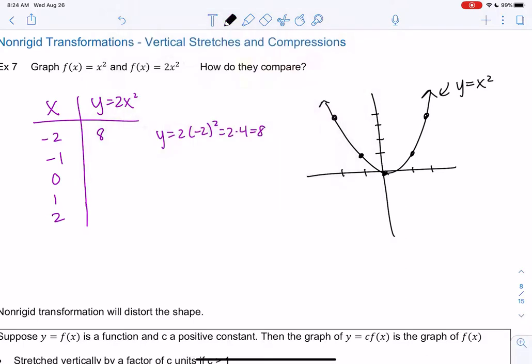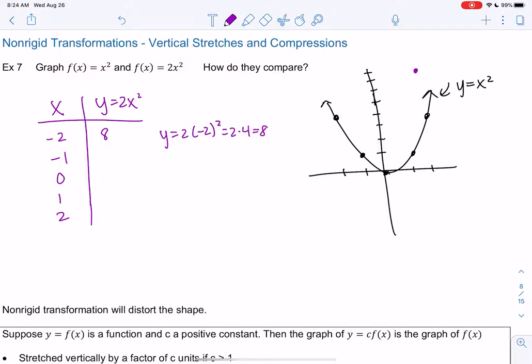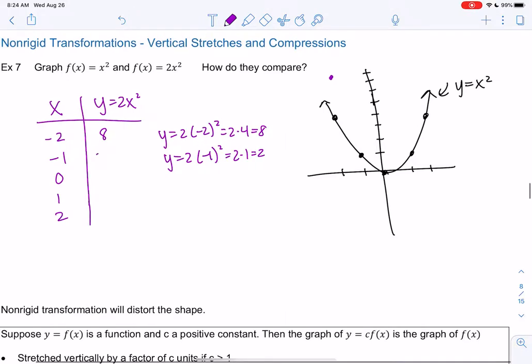So what happens if I plug in negative 2 now? So we get y equals 2 times negative 2 squared. So we'll get 2 times 4, which is 8. So let's make room for 8 on my graph. 4, 5, 6, 7, 8. So we're going to go to negative 2 and it looks like it's just going to be way higher than the previous one. If I plug in negative 1, we get negative 1 squared is 1 times 2 is 2. So negative 1, 2. 0, 2 times 0 is 0. So 0, 0.